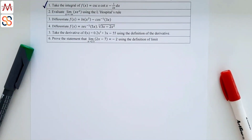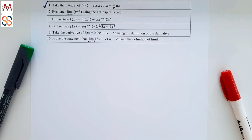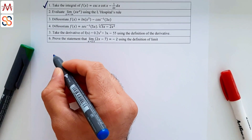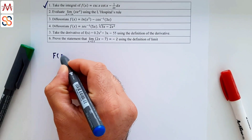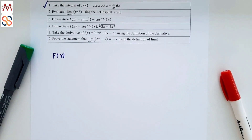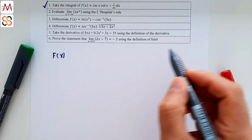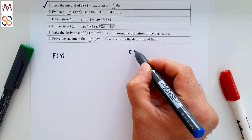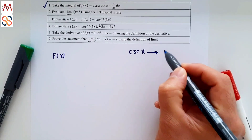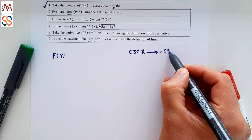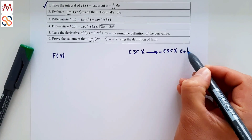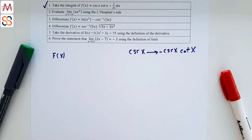First, let's solve problem number 1: take the integral of f(x) = csc(x)cot(x) - 1/(2x) dx. We use uppercase F to show the antiderivative. To solve the problem, we know that the derivative of csc(x) is -csc(x)cot(x), and integration is the opposite action of differentiation.